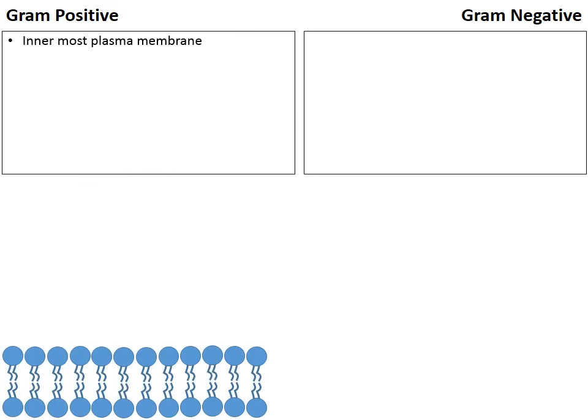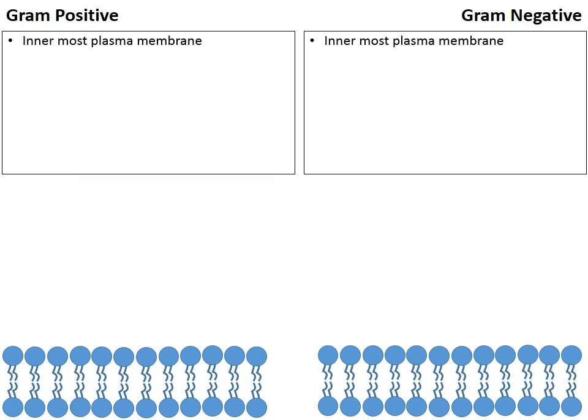Let's do a little compare and contrast: gram-positive versus gram-negative bacteria. Gram-positive bacteria have an innermost plasma membrane — and there it is in my drawing. Gram-negative bacteria also have an innermost plasma membrane. So there's our phospholipid bilayer, the plasma membrane.